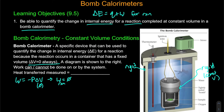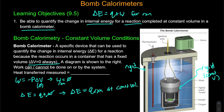If we bring that back to the fact that we know our change in internal energy is equal to Q plus W, and W is zero, what we'll notice is that our change in internal energy is equal to the Q of our reaction at constant volume conditions. We also see this as Q sub V to note we're at constant volume.